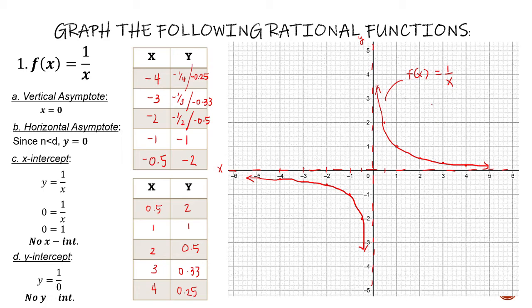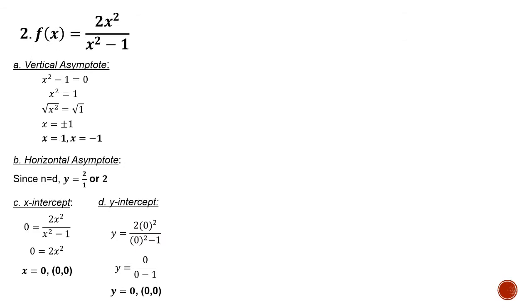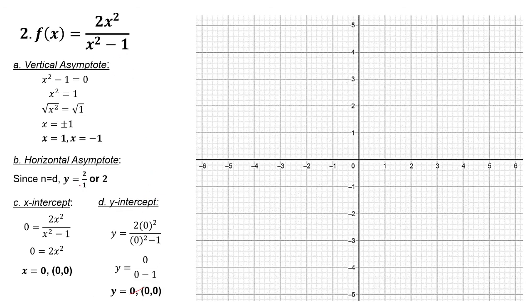Let's have one more example. Same process — we find the vertical asymptote, horizontal asymptote, and the intercepts. Here are the solved values: we have two vertical asymptotes — x equals 1 and x equals negative 1. The horizontal asymptote is y equals 2. And the intercepts are both located at the origin, so we are sure that the function passes through the origin.